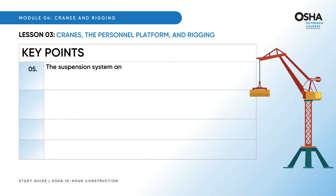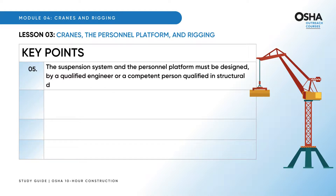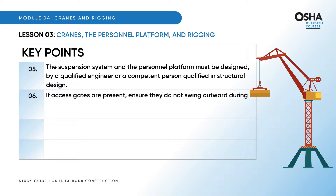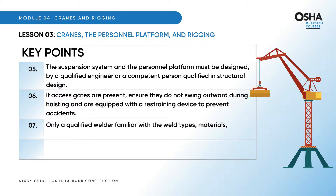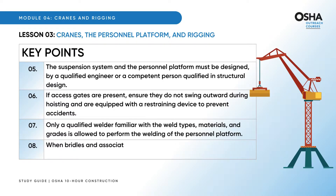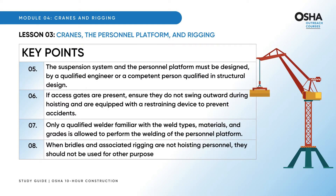The suspension system and the personnel platform must be designed by a qualified engineer or a competent person qualified in structural design. If access gates are present, ensure they do not swing outward during hoisting and are equipped with a restraining device to prevent accidents. Only a qualified welder familiar with the weld types, materials, and grades is allowed to perform the welding of the personnel platform. When bridles and associated rigging are not hoisting personnel, they should not be used for other purposes.